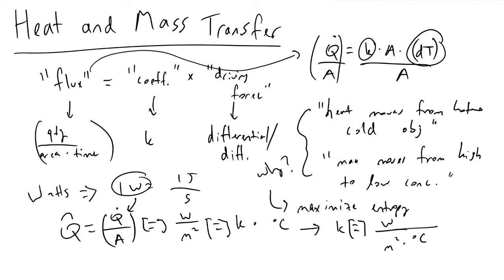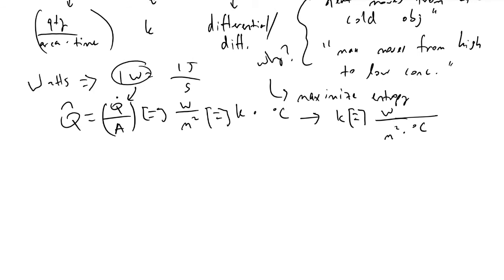These dimensions will vary depending on the units in your specific problem. When we look at mass transfer, we measure mass in kilograms or kilomoles. We care about rates, so this would be kilograms of something moved per second — that's our mass flux. Then we divide by area, asking how many kilograms per second are moving through this material in one square meter of space. This is the left side of our general flux equation.